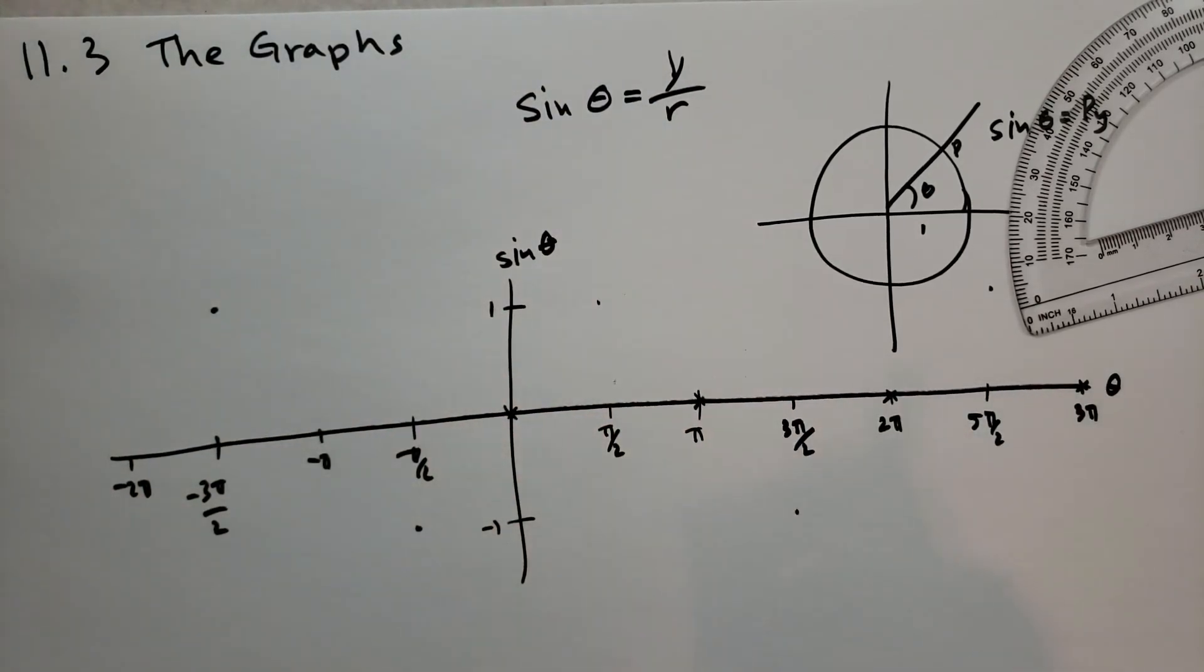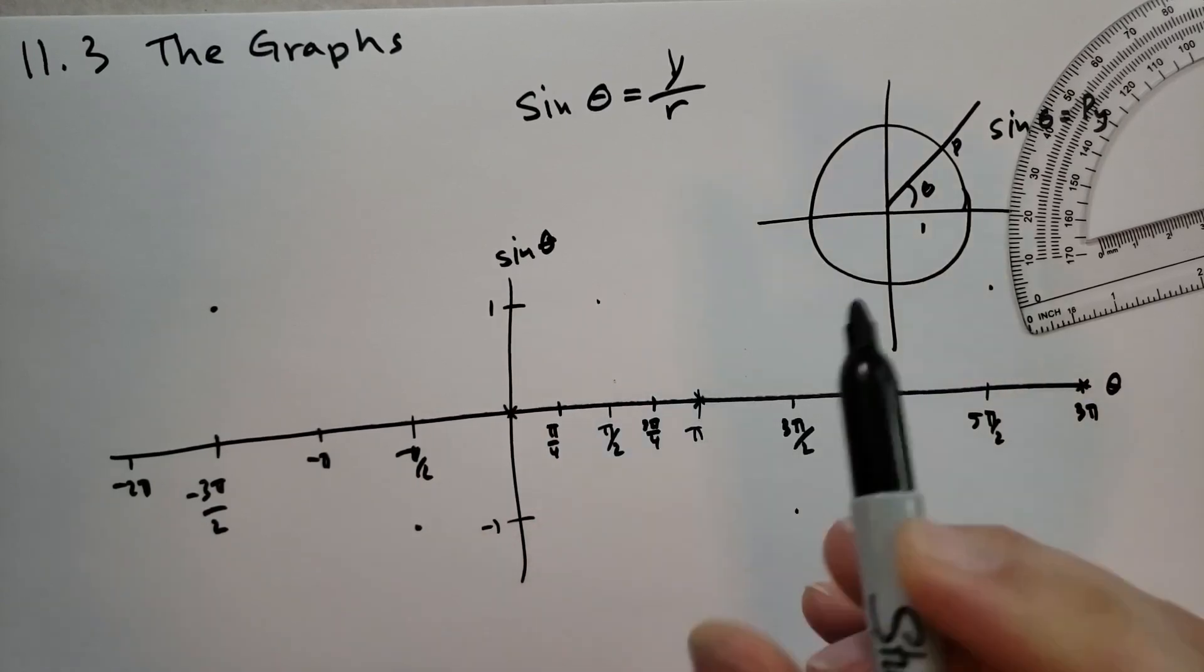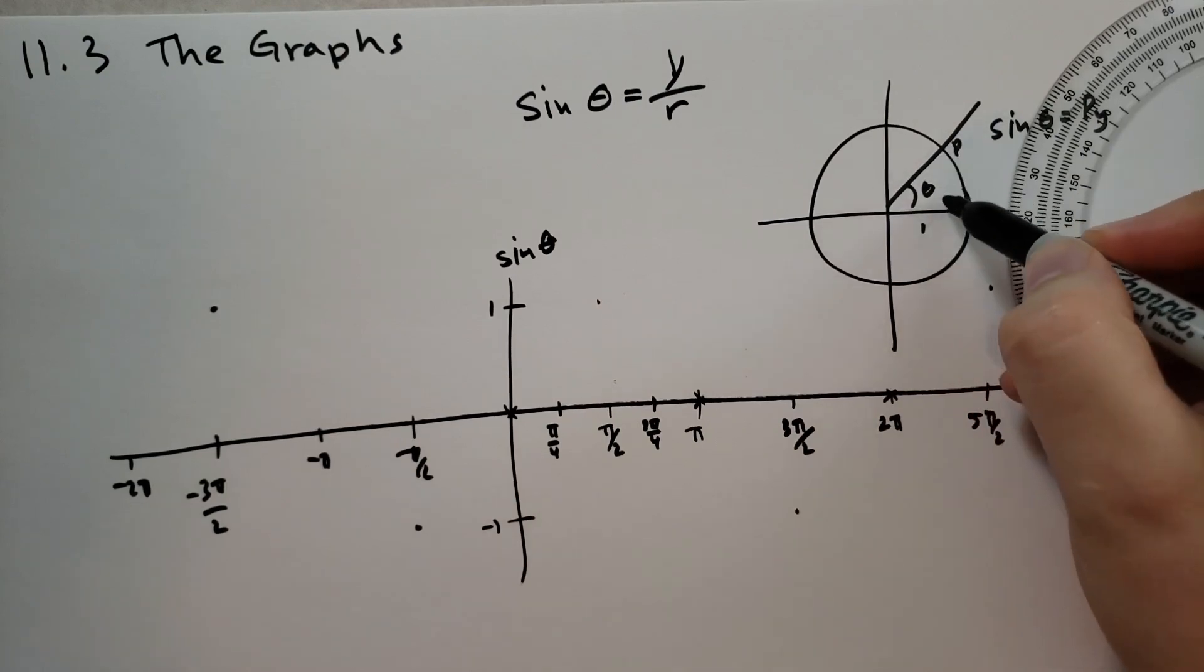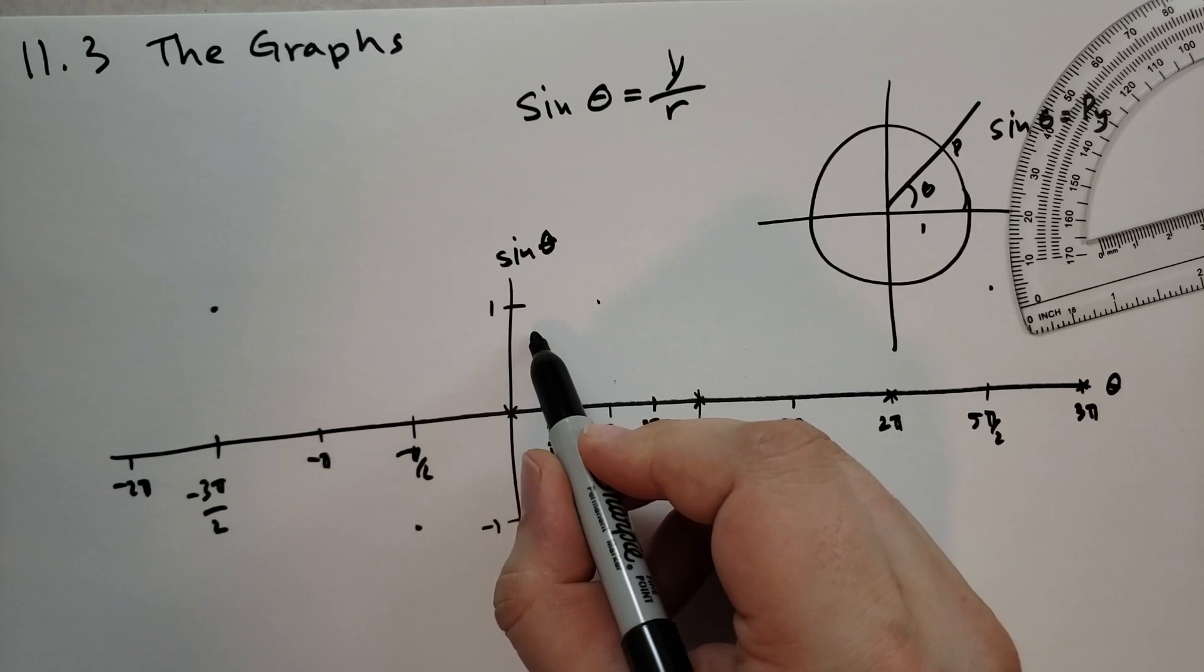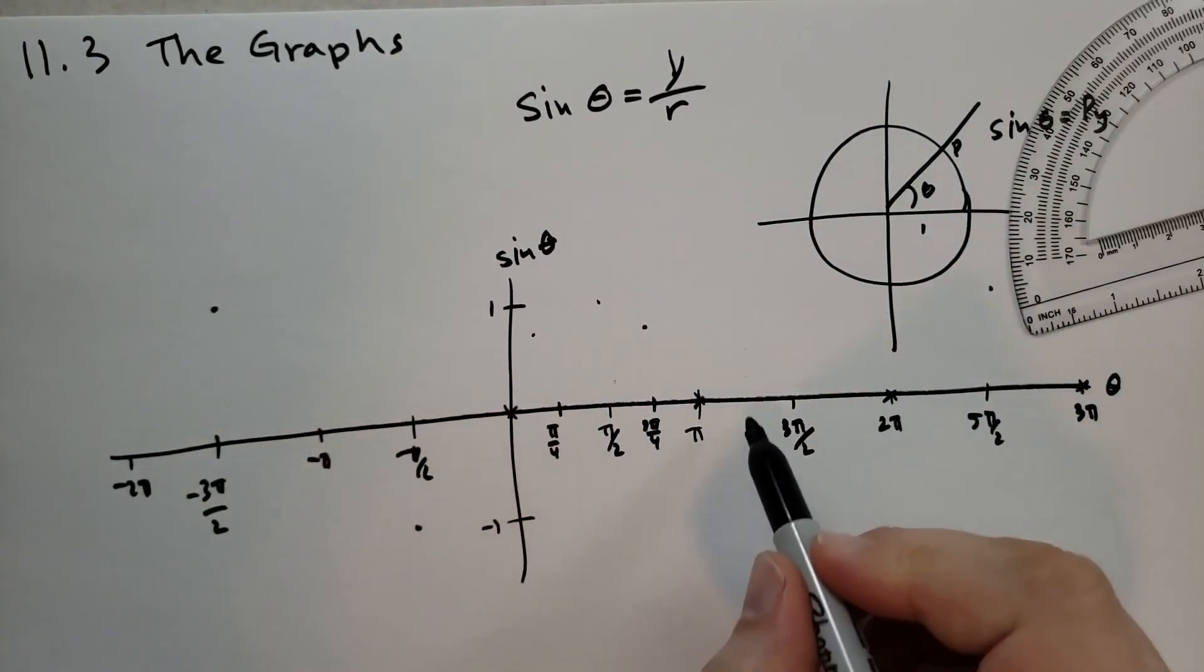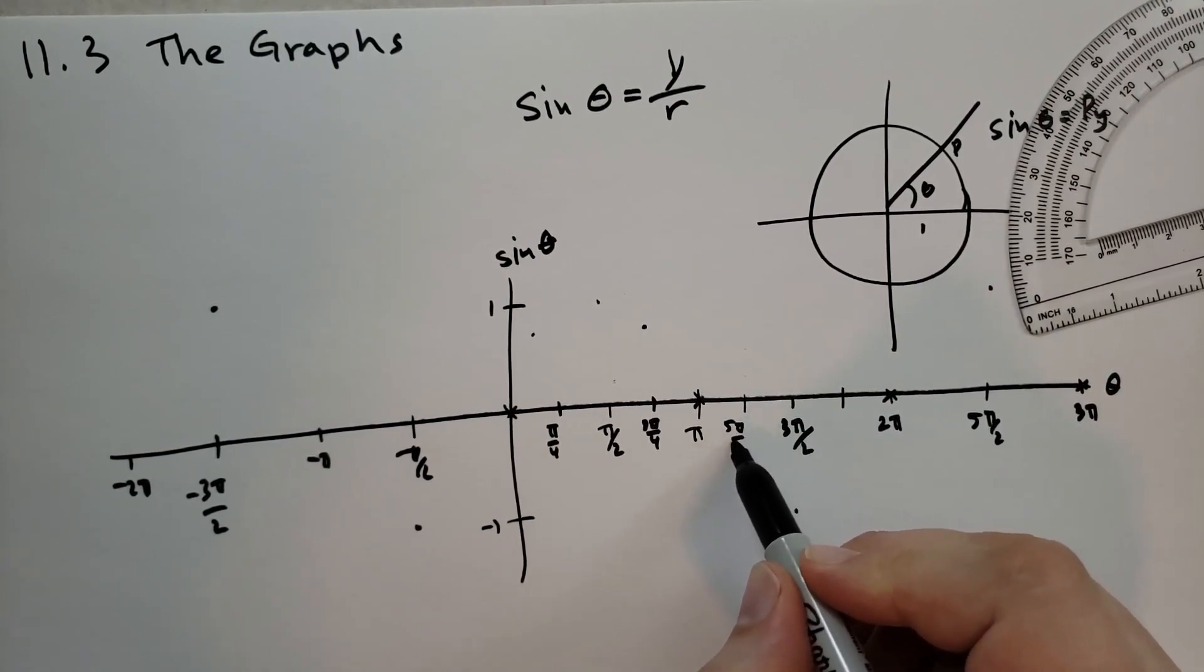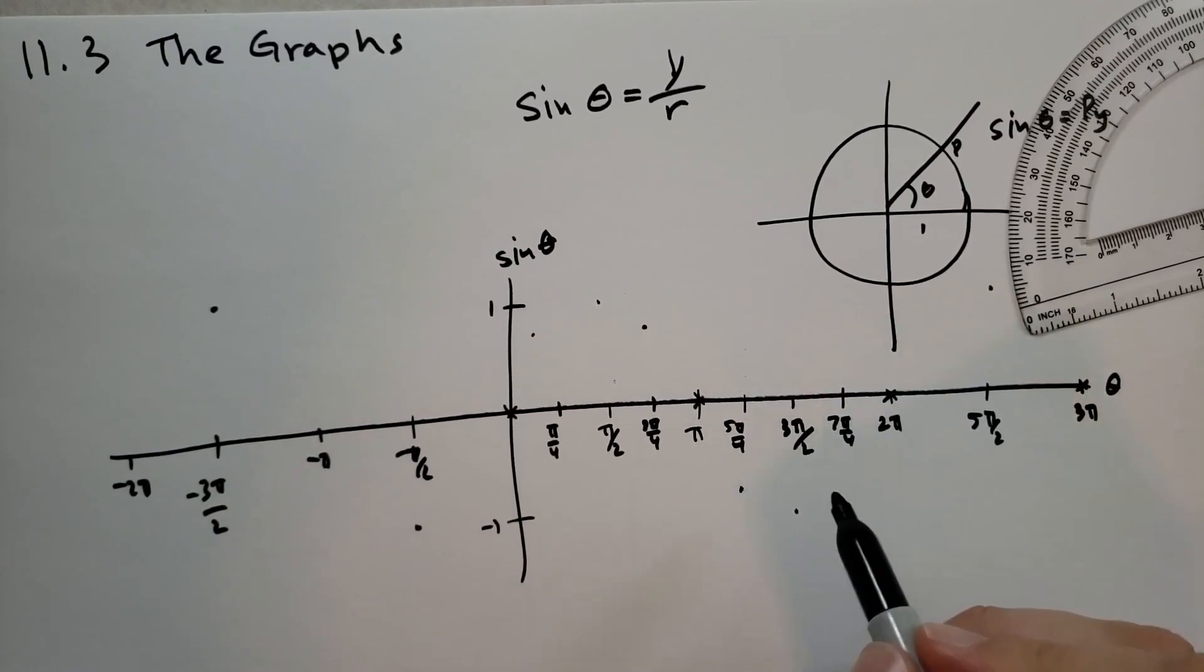Then we have to think about our values for the quarter angles. At pi over 4, that's going to be a 45 degree angle, so it's going to be root of 2 over 2. That's going to be 0.7 something. I'm going to draw that up there. And this one also over there. And at 5 pi over 4 and 7 pi over 4, these are going to be negative 0.7.